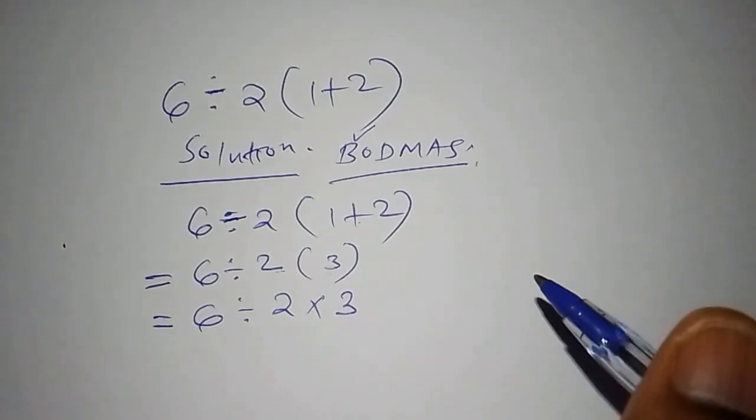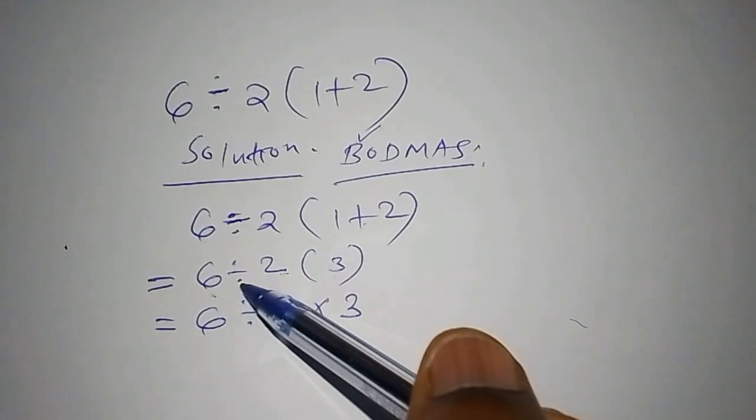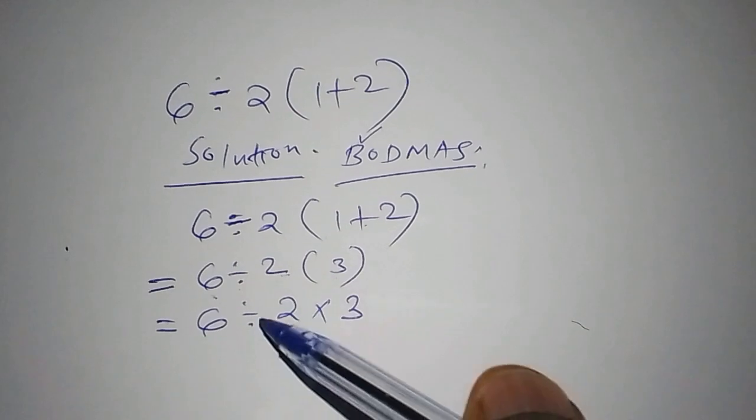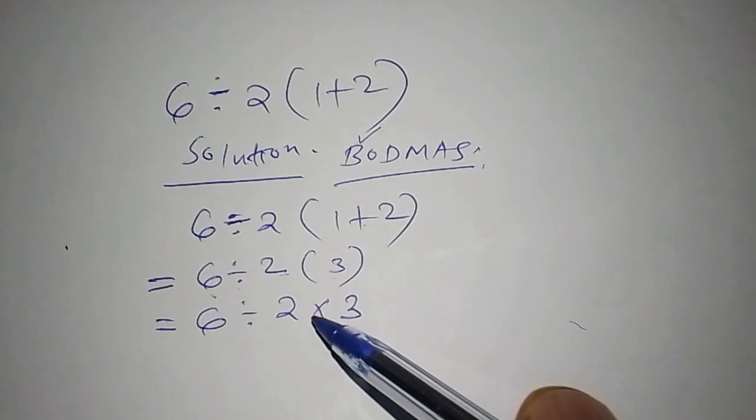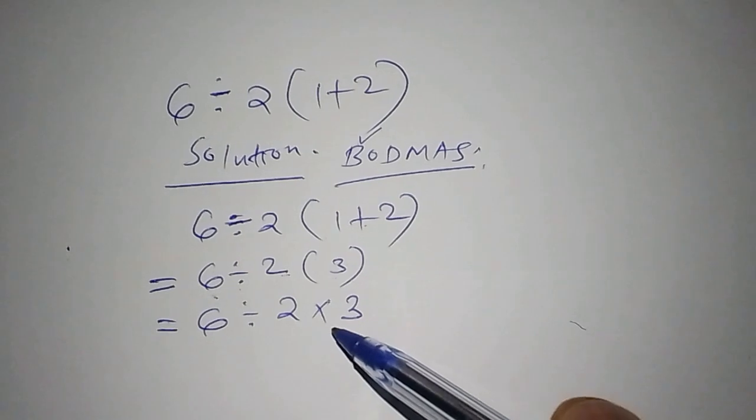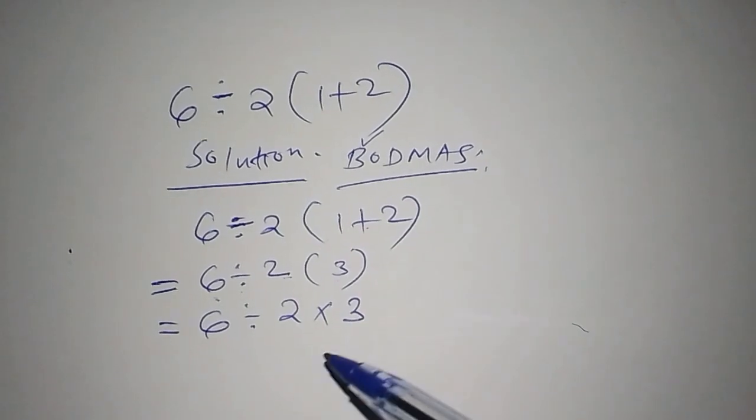Some people make a mistake of just working out 6 by 2 directly, then from there they work out 3, which is very wrong. You first have to work out the number that is inside the bracket first.